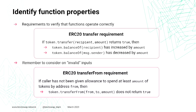Something that is very easy to forget is checking the invalid inputs of our functions. For example, the token.transferFrom function from the ERC20 contract requires that the address 'from' has given the sender allowance to spend the tokens. So if the allowance has not been given, then transferFrom must not return true.